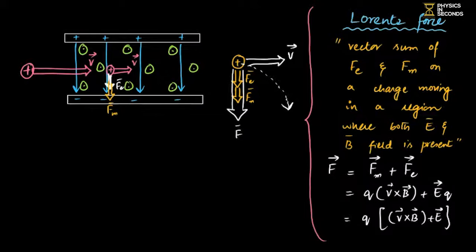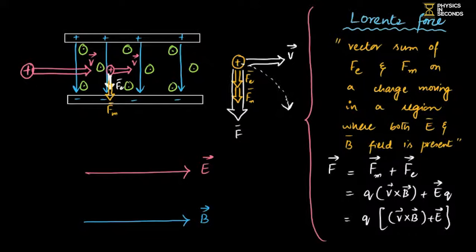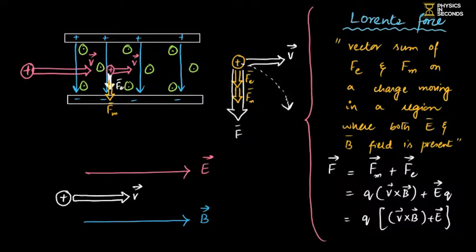Two questions to conclude: Case 1 — a region has both electric and magnetic fields in the same direction (both towards right), and a positive charge is projected in the same direction. Since velocity is parallel to magnetic field, the angle is zero degrees, so no magnetic force acts. Electric force acts along the direction of motion, so velocity increases, acceleration is positive, work done is positive (by electrostatic force), and kinetic energy increases.